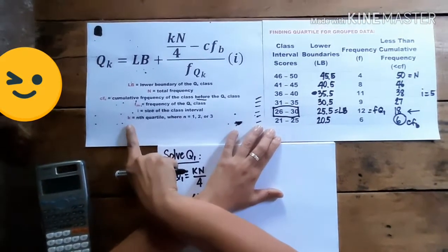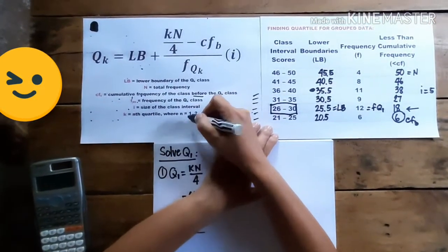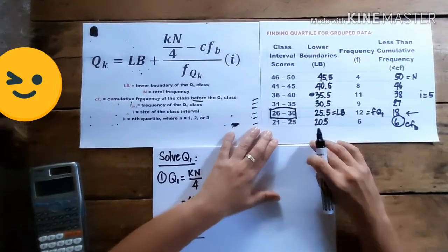And of course, the K, that we replaced with 1, because we're solving for quartile 1.